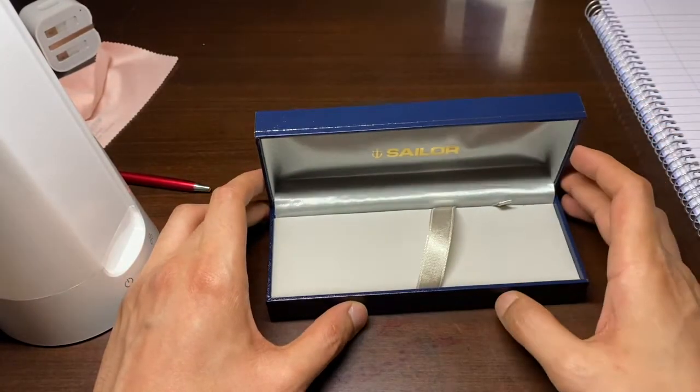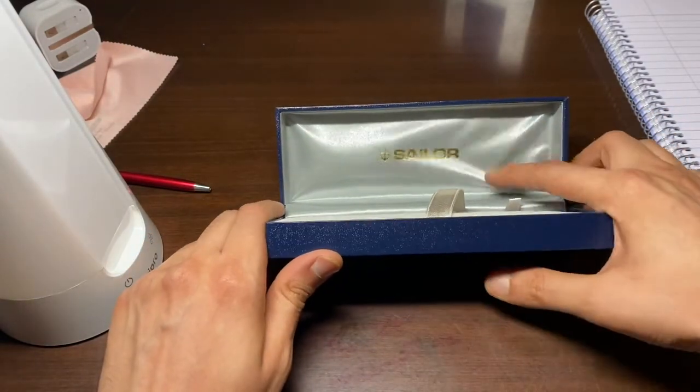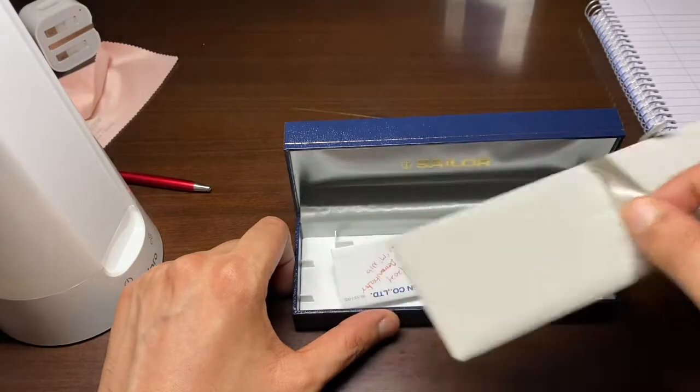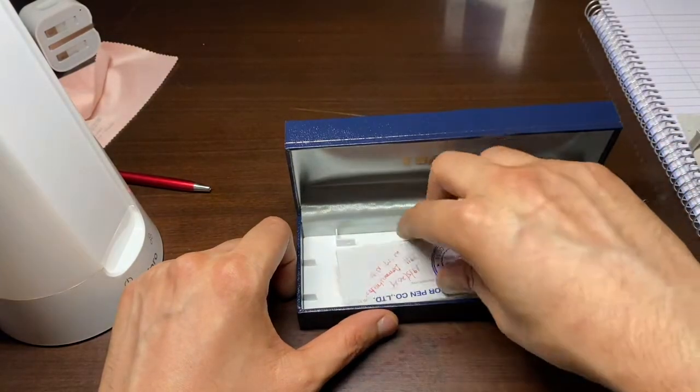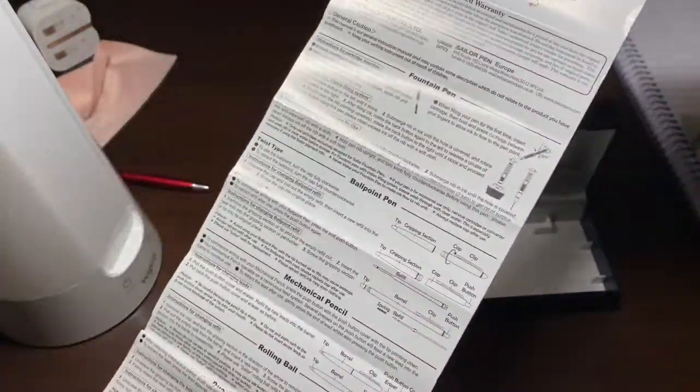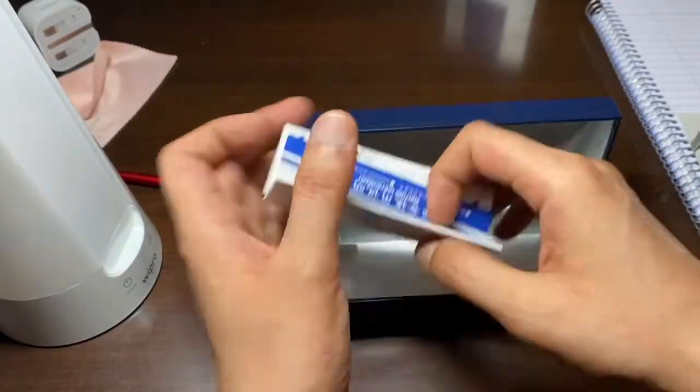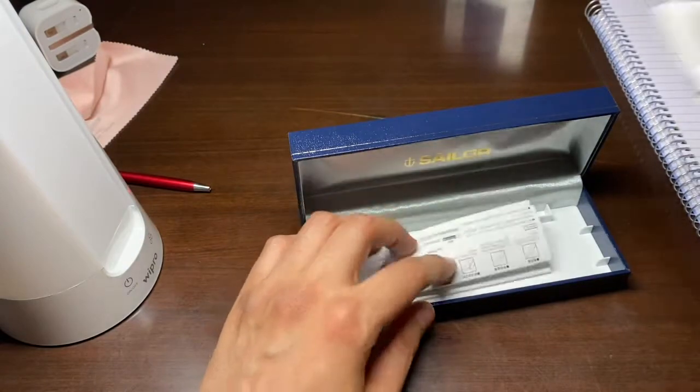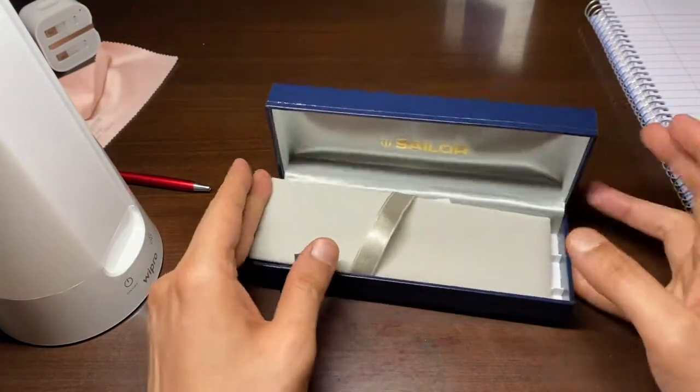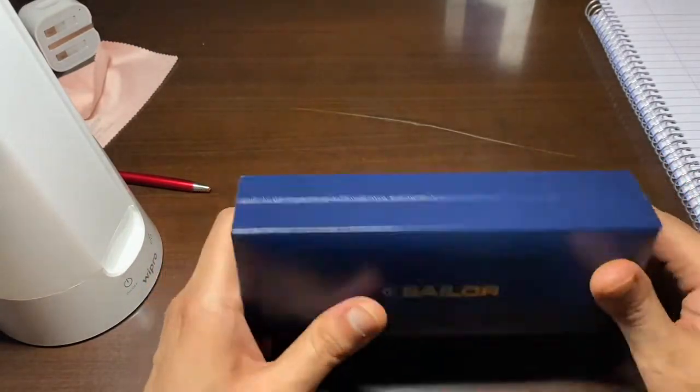So there's nice soft silk padding here. We take this out, these are the only things that came with it - the instructions. We got English and then Japanese. That is the case itself. I think this is the regular case that comes with all their pens, nothing special here.